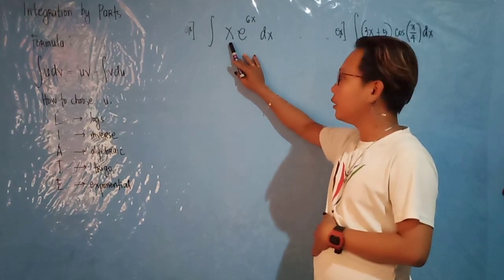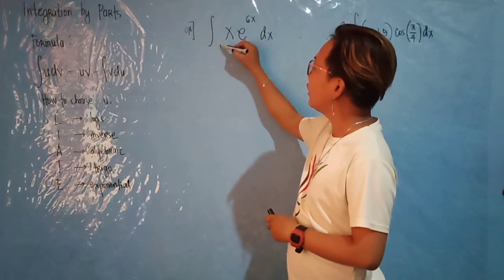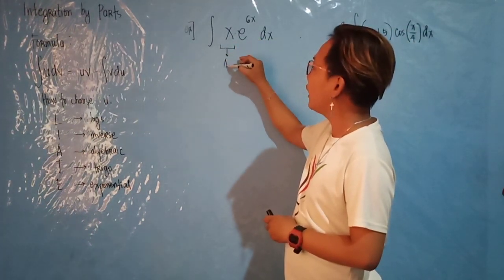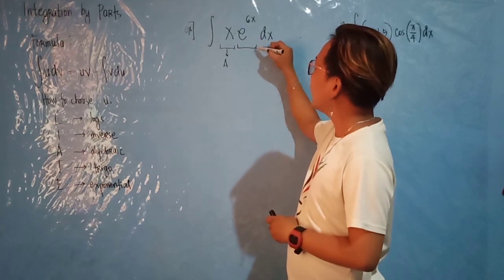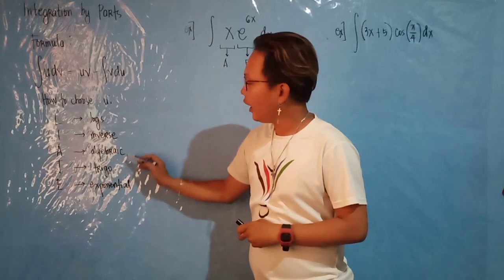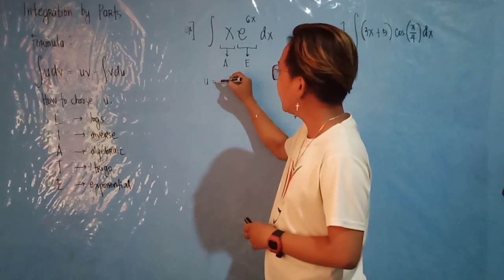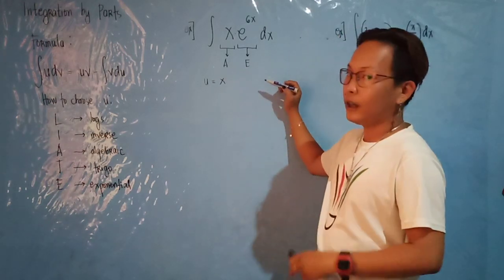Now you have to consider the LIATE for choosing u. X is for the algebraic, and e raised to 6x is for the exponential. Based on LIATE, A comes first before E, so you have to choose x as your u.